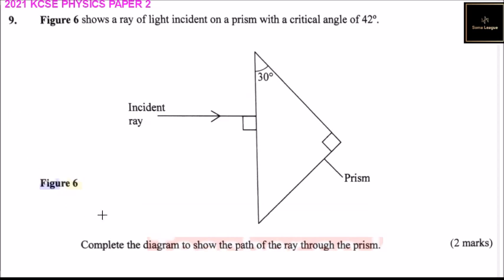So we are told to complete the diagram to show the path of the ray through the prism. So to be able to do that, it means that since we have the critical angle, the ray will continue straight to the other side of the prism.